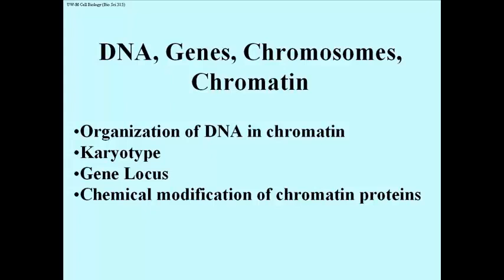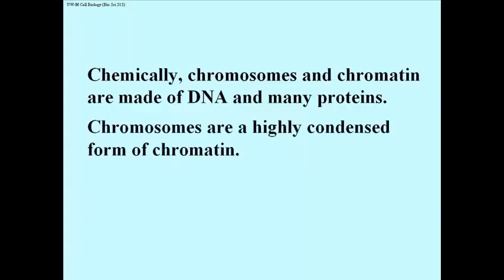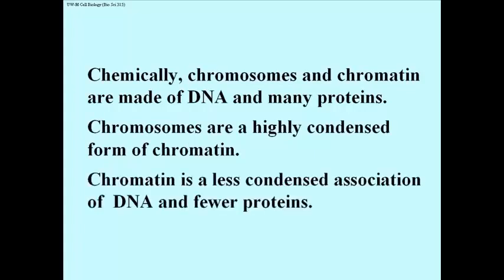We'll take a brief look at how the chemical modification of chromatin proteins causes the chromatin to change conformation. Chemically, chromosomes and chromatin are made up of DNA and different proteins. Chromosomes are highly condensed forms of chromatin. Chromatin then is a less condensed association of DNA, with in fact fewer proteins.